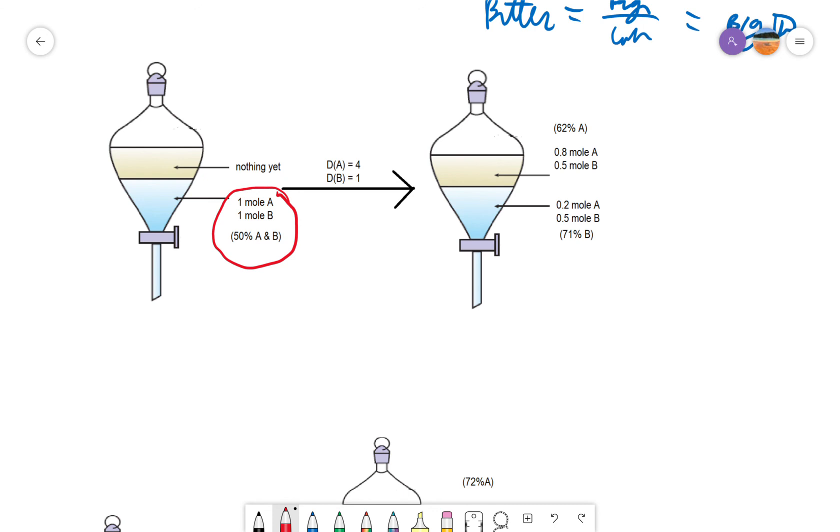If we put the mixture of A and B into the separatory funnel, a one to one molar mixture, and we allowed it to separate, then after we did one equilibrium, there would be 0.8 moles of A in the upper phase and 0.2 moles of A in the lower phase, setting up a 4 to 1 ratio based on its distribution coefficient.